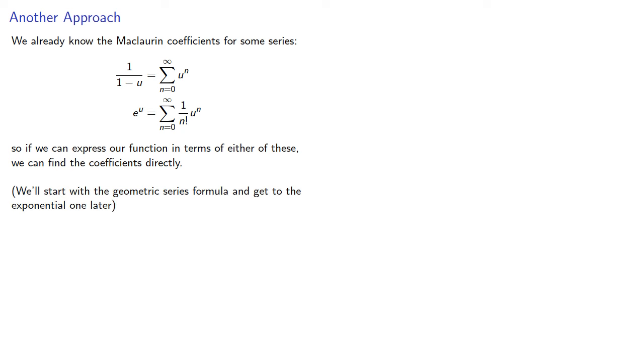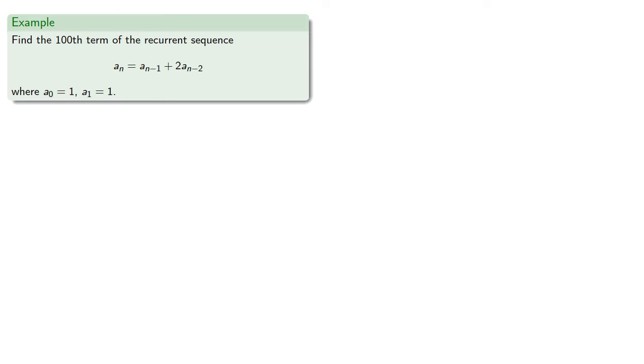We'll start with the geometric series formula and get to the exponential one later on. To motivate this, let's find the 100th term of the recurrent sequence. And while we could compute a2, a3, a4, and so on up to a99, this would take a lot of effort. Instead, let's find the generating function.